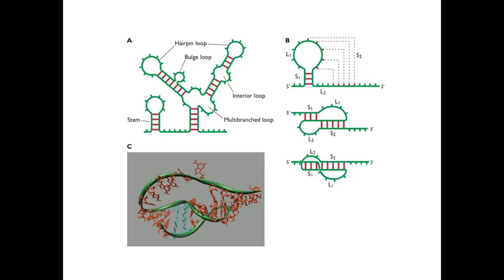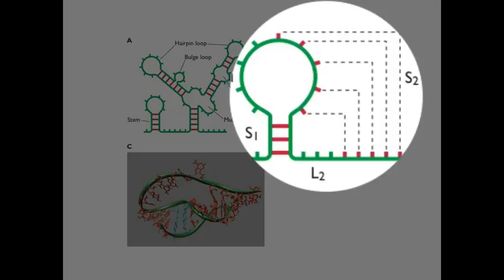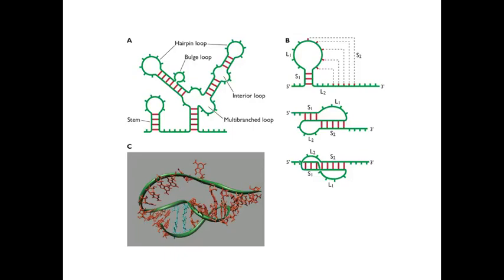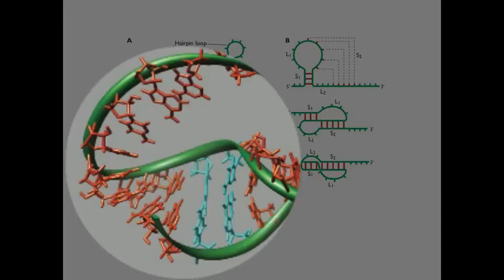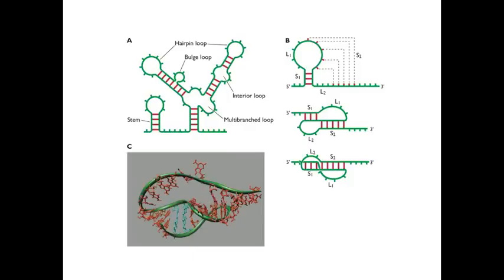Another kind of secondary structure, rather complex, is called a pseudoknot. In a pseudoknot, you have a stem-loop structure, and then some bases in the loop base pair with sequences downstream — base pairing with a linear portion of the RNA — forming what are essentially two adjacent stems. It forms a knot-like structure, though the RNA doesn't actually pass through a loop. Pseudoknots also have biological functions, as we'll encounter going forward.